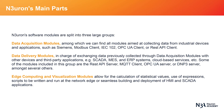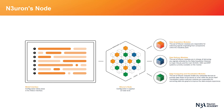Last but not least, edge computing and visualization modules allow for the calculation of statistical values, use of expressions, and scripts to be written and run at the network edge, or seamless building and deployment of HMI and SCADA applications. All configurations are applied at node level, whether for connecting to an OPC server, an external database, a third-party cloud application, or an industrial device on the plant floor. The node is where all Neuron's settings take place via the web UI interface.